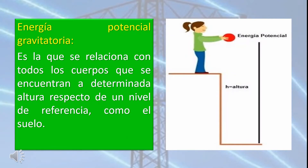A continuación, hablaremos sobre las diferentes formas en las que la energía se hace presente en nuestro entorno. Número 1: energía potencial gravitatoria. Es la que se relaciona con todos los cuerpos que se encuentran a determinada altura respecto de un nivel de referencia como el suelo.